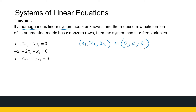So there will never be a case where a homogeneous system has no solutions — always at least one solution. Now the question is: when will it have more than one solution? That will be the case when we have free variables. If I've got three leading ones after Gaussian elimination, I will have only one solution — the trivial solution. But if I have n unknowns and only r non-zero rows, where r is less than n, I can only get leading ones in r of them, giving n minus r free variables, which generates an infinite number of solutions.